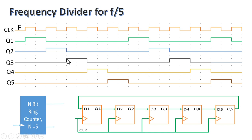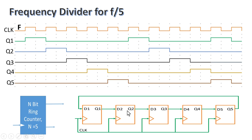In the next clock cycle, Q3 goes high and Q1, Q2 become 0. Then Q4 goes high with Q1, Q2, Q3 all 0. In the fifth clock cycle, Q5 goes high and all other flip-flops hold 0. On the next clock edge, Q5 is passed back to flip-flop 1, so Q1 goes high again and Q2, Q3, Q4, Q5 remain 0. This way, the value 1 keeps rotating within the ring counter, and at any given time only one flip-flop holds a high value.